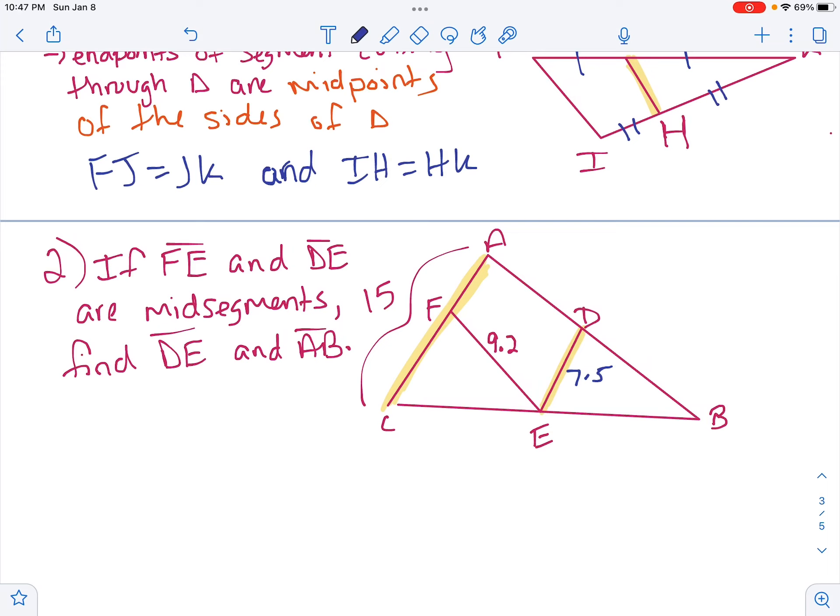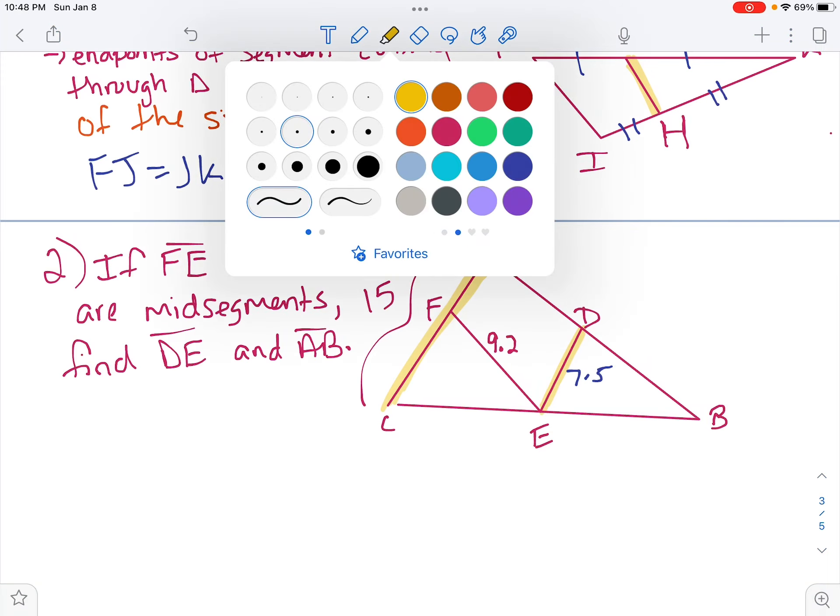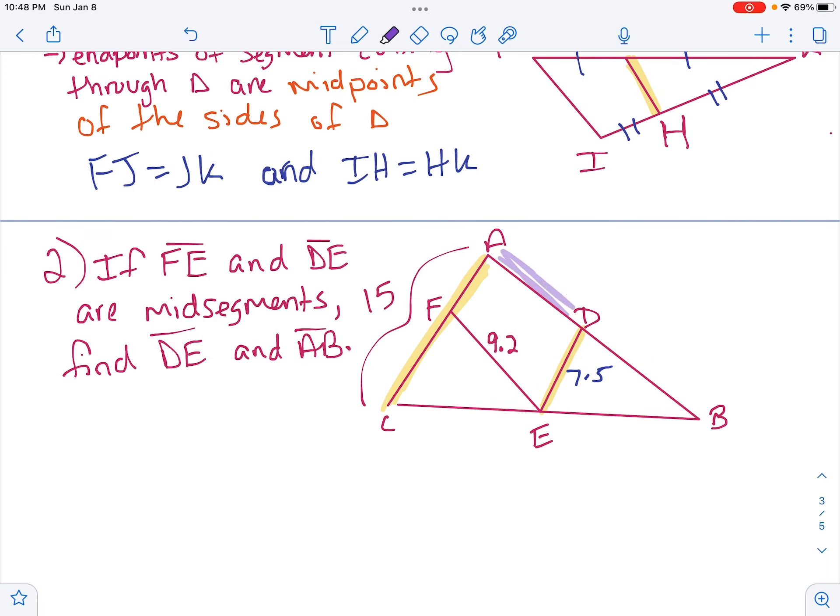Then, if we're finding AB, so now we're finding this whole thing. Well, who's he parallel to? He's parallel to FE. Now, FE is the mid-segment, which means now we're multiplying by 2 to get 18.4 as the side.